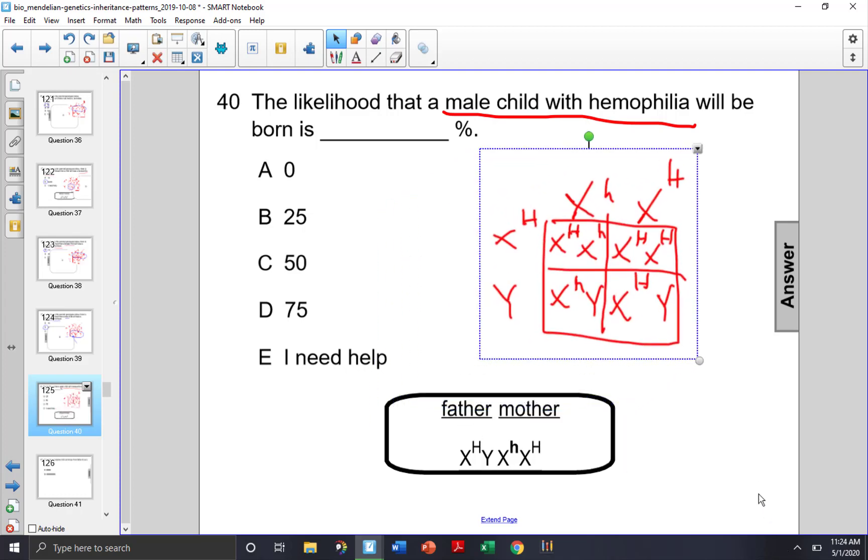Alright, here it is. So out of the four offspring here, we're looking for the males, so that's only the bottom row.